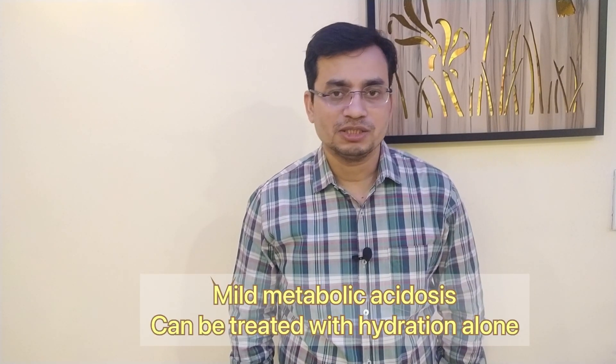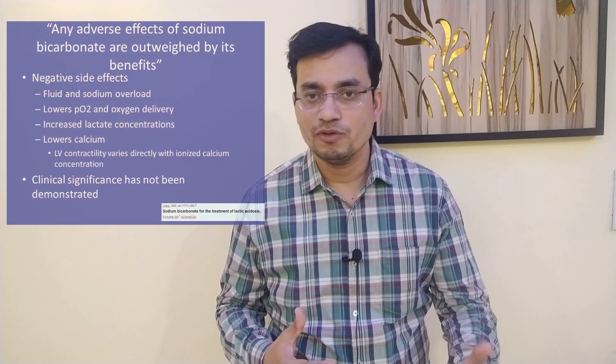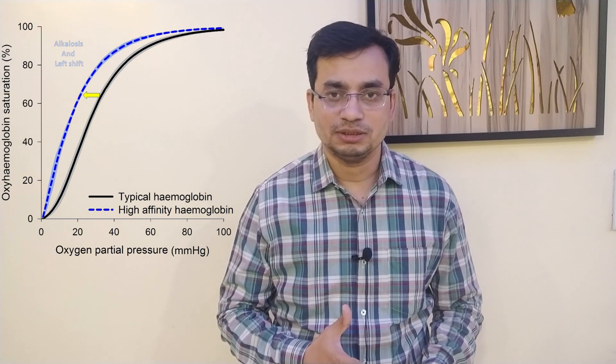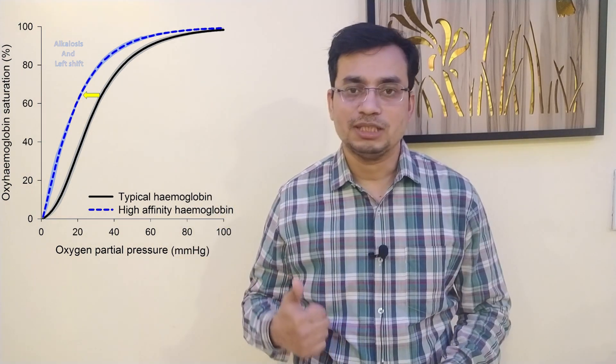Mild acidosis with pH more than 7.2 can usually be reversed by adequate hydration itself. But severe metabolic acidosis with pH less than 7.2 or bicarbonate less than 15 may need sodium bicarbonate injections or infusions — though this should be a temporary measure only. Definitive therapy such as dialysis should be started, because there are many complications of using sodium bicarb in ICU: volume overload, hypernatremia, paradoxical intracellular acidosis, left shift of the oxygen-hemoglobin dissociation curve limiting oxygen delivery at tissue level, and it may also worsen hypocalcemia and respiratory acidosis.